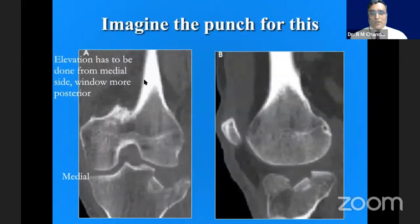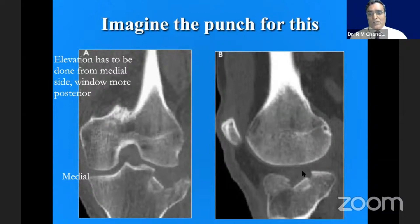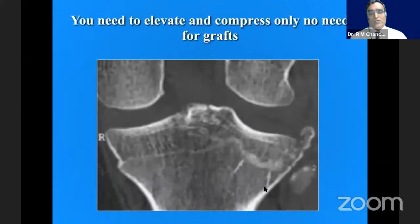Imagine the punch for this. Here you cannot elevate from the lateral side — you will have to go medially. This needs an elevation punch from a more posteriorly placed window; you cannot elevate it by this window alone. We need to plan our punches appropriately.